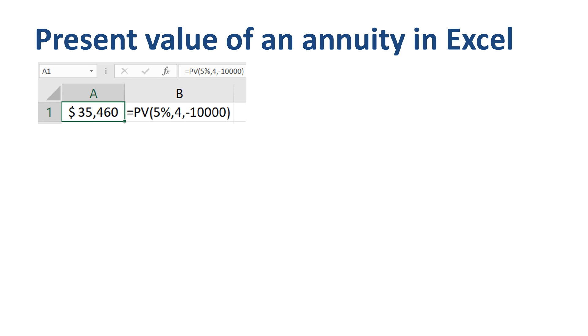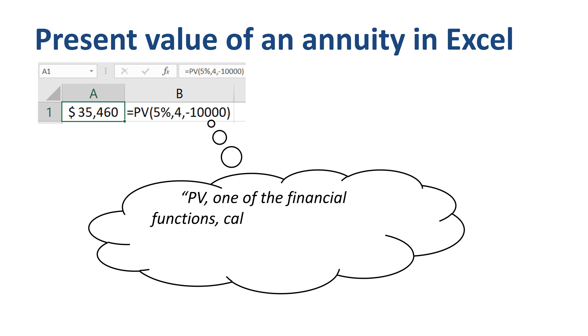The Microsoft Excel help description states that PV, one of the financial functions, calculates the present value of a loan or an investment based on a constant interest rate. So their thinking is primarily from the perspective of loans or mortgages, whereas mine is from the perspective of annuity payments as part of a pension plan.